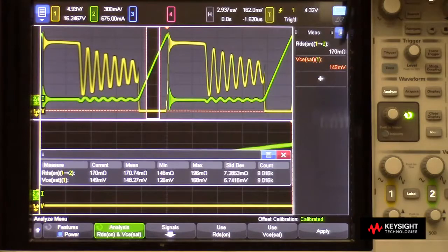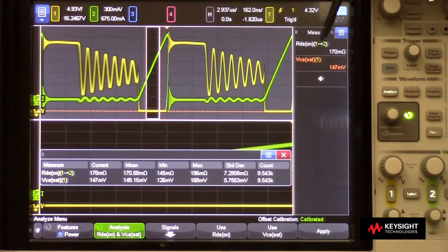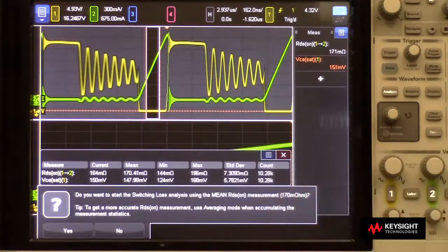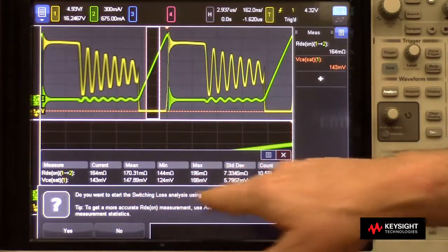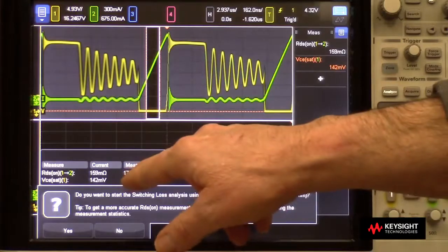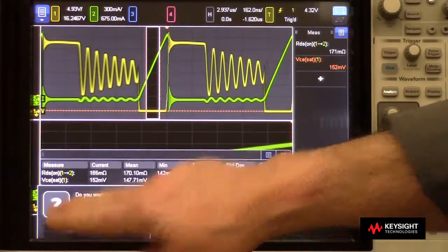Now that I know what the approximate value of RDS-on is, I can actually use this value and automatically perform a switching loss measurement. Down here I can select Use RDS-on. And it says, do I want to start a switching loss measurement and use the mean value, which would be this 170? And the answer is yes.